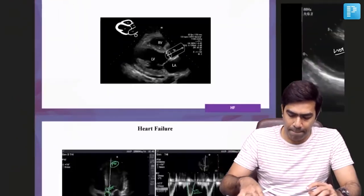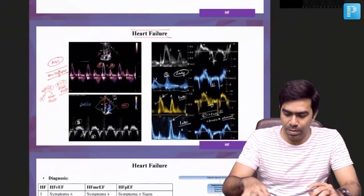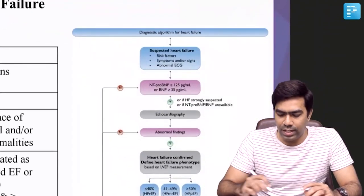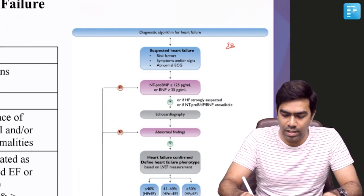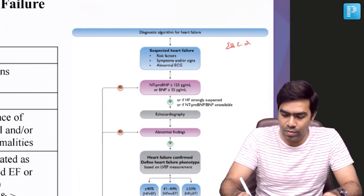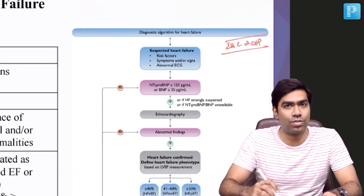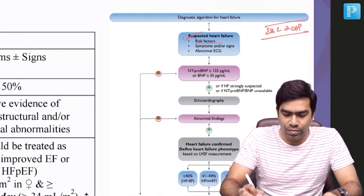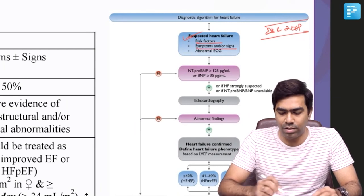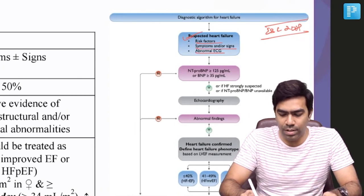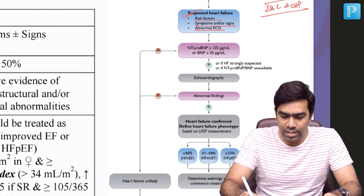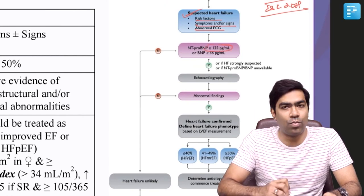These are the diagnostic algorithms given in ESC 2021 guidelines to diagnose heart failure. You can suspect heart failure in patients who are having risk factors like diabetes and hypertension, those who are having symptoms and signs pertinent to heart failure, and those having an abnormal EKG. If that is the case, then you can do NT-proBNP.